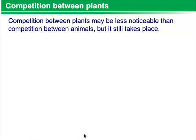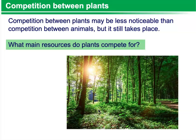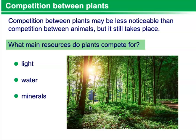Competition between plants. Competition between plants may be less noticeable than competition between animals, but it still takes place. So what main resources do plants compete for? First and foremost, they compete for light. They also compete for water, minerals, and space.